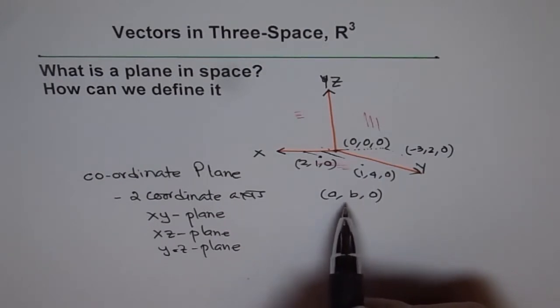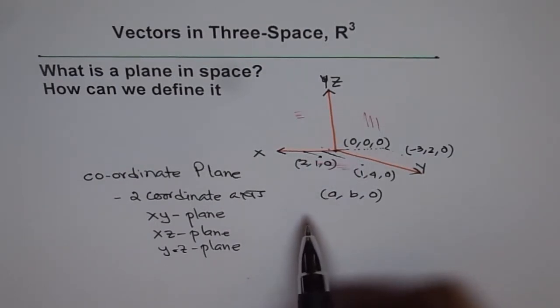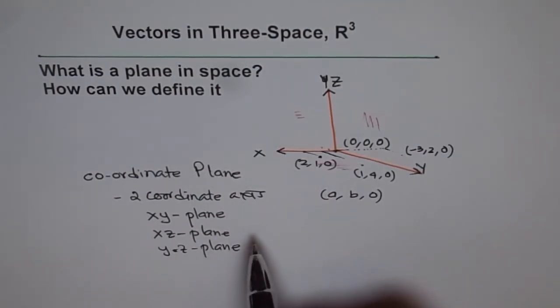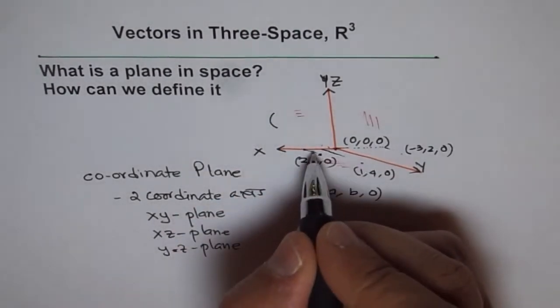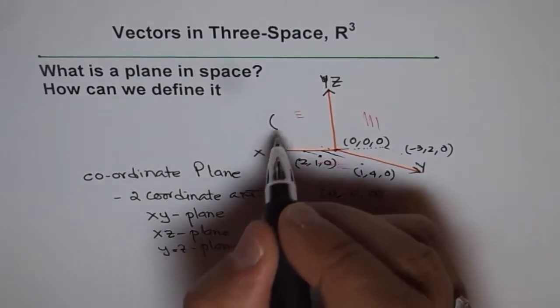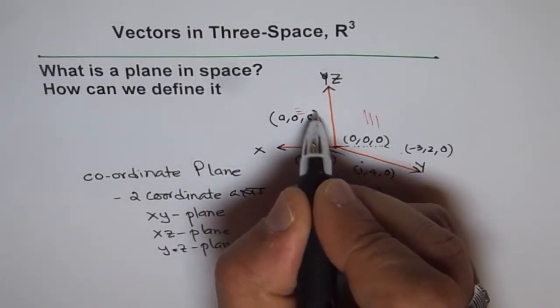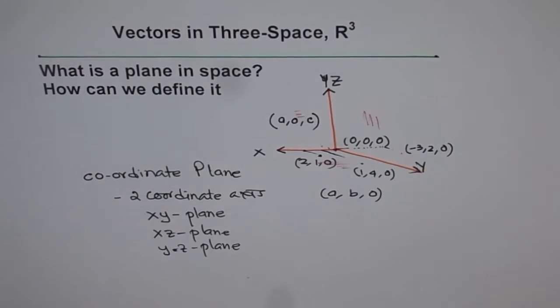You can do the same exercise for the other two planes. So in this plane, for example, your general point will be here, Y is zero. So it will be (A, 0, C) for Z. Do you get it? So that is how we can get a point in a plane. Now the second question is, can we give kind of an equation?